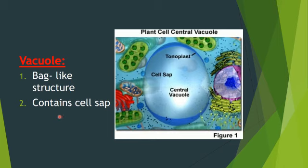Where do plants get these substances? Plants make sugar by themselves through the process of photosynthesis, and they get water from the soil through the roots. This sugar and water, in the form of cell sap, is stored in the big vacuole.